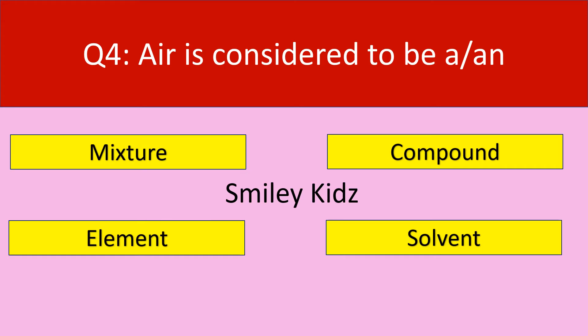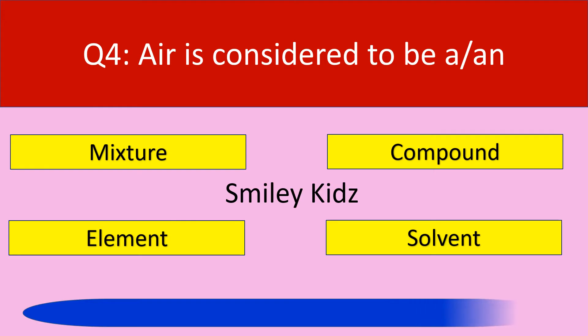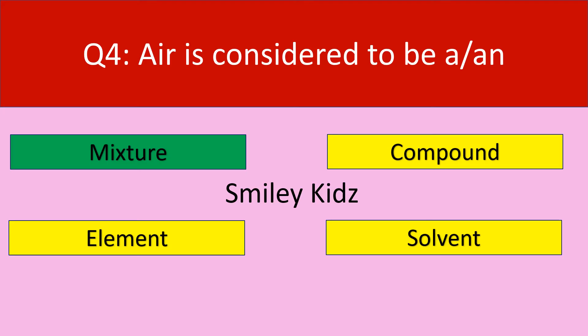Question number 4. Air is considered to be a — your options are mixture, compound, element, solvent. The correct answer is mixture. Air is considered to be a mixture.